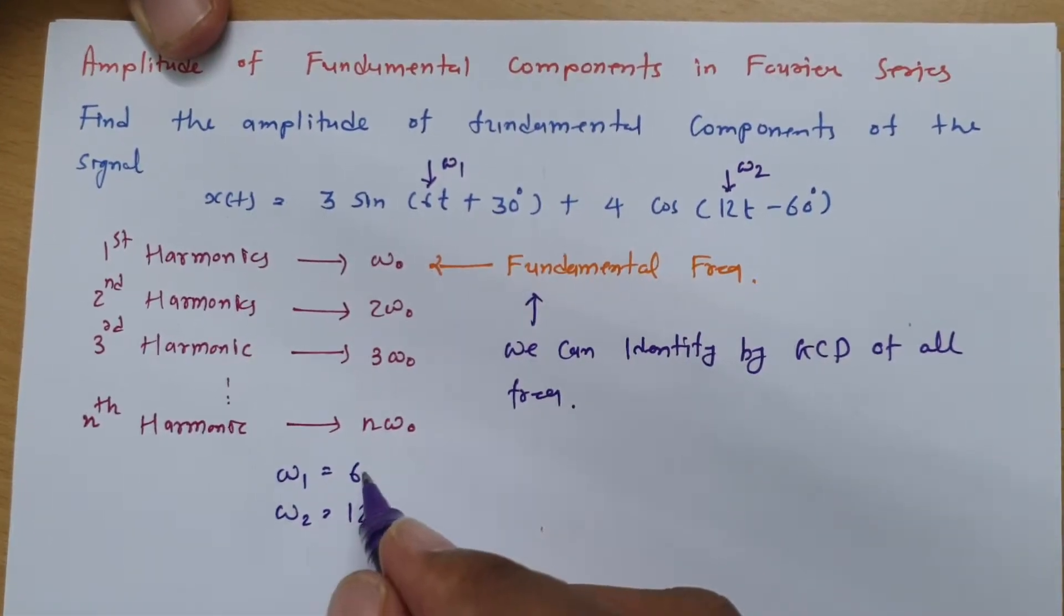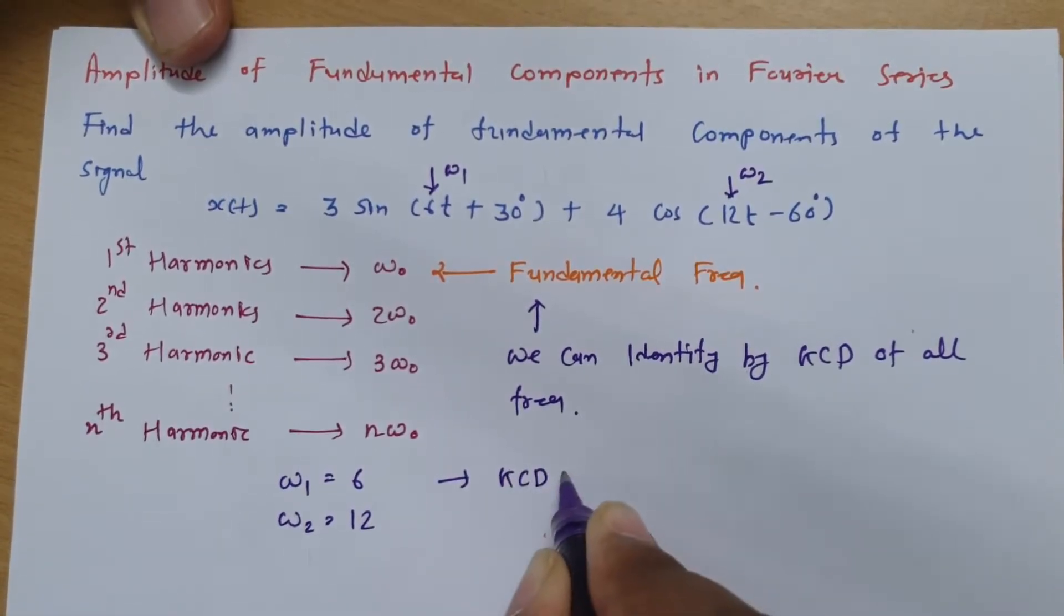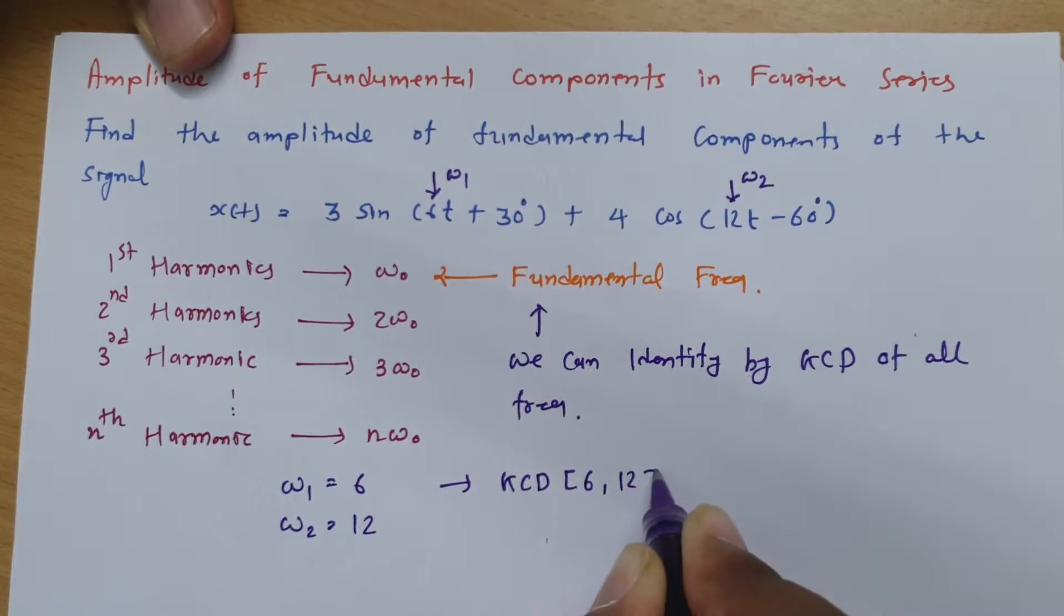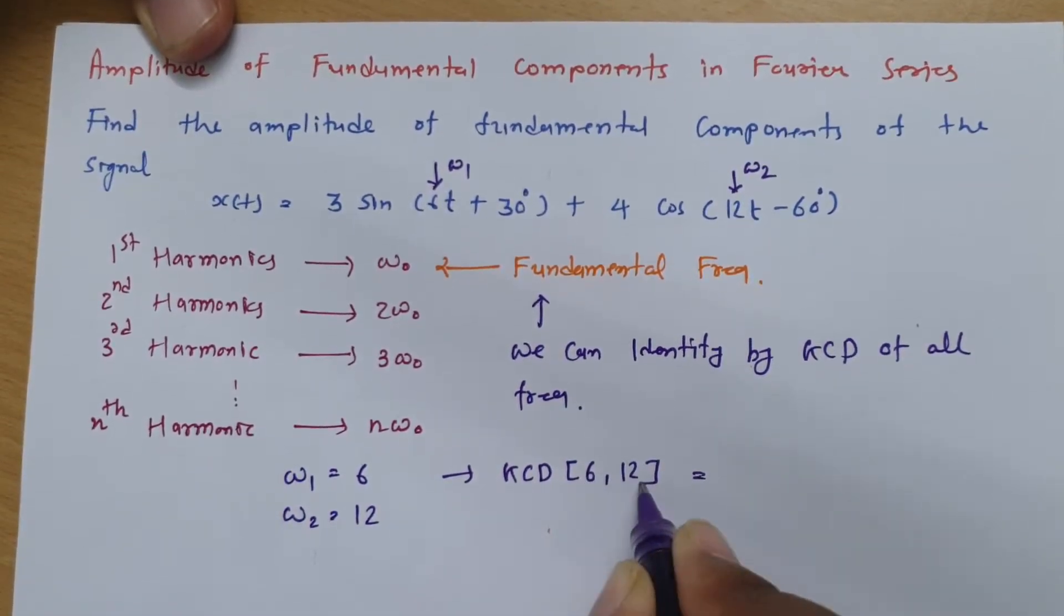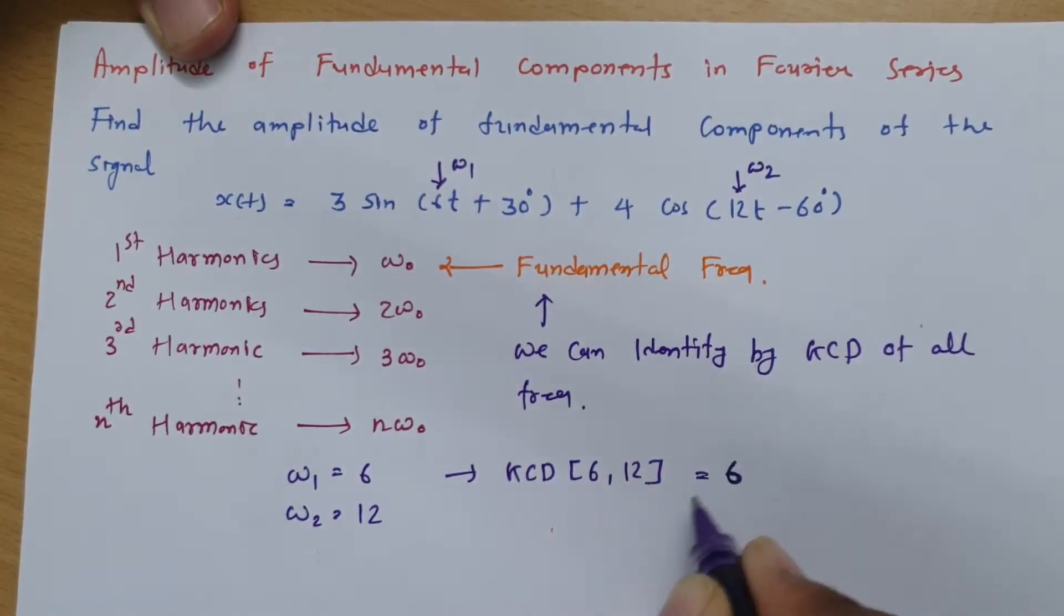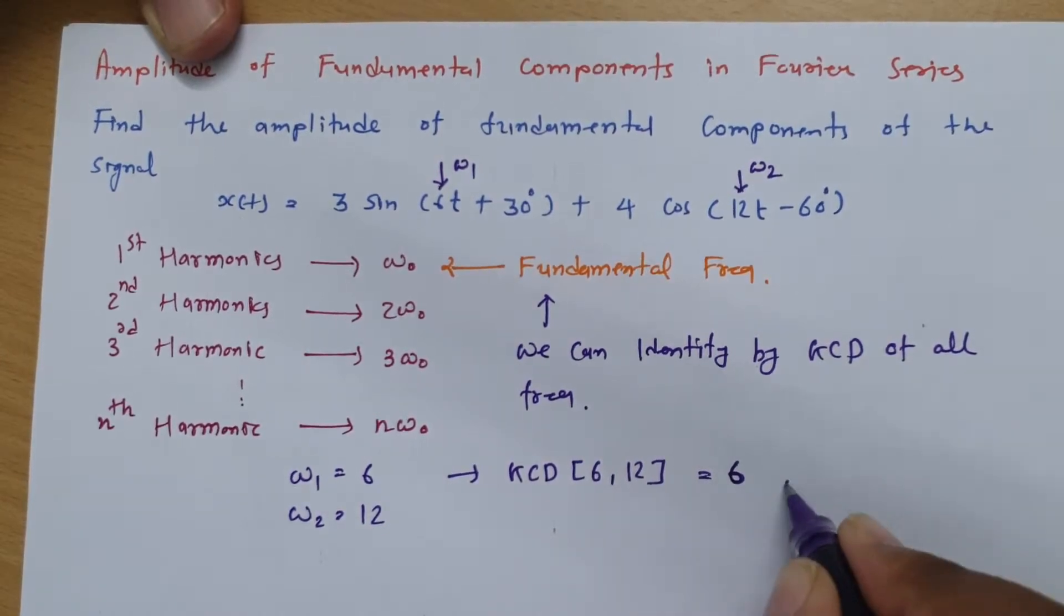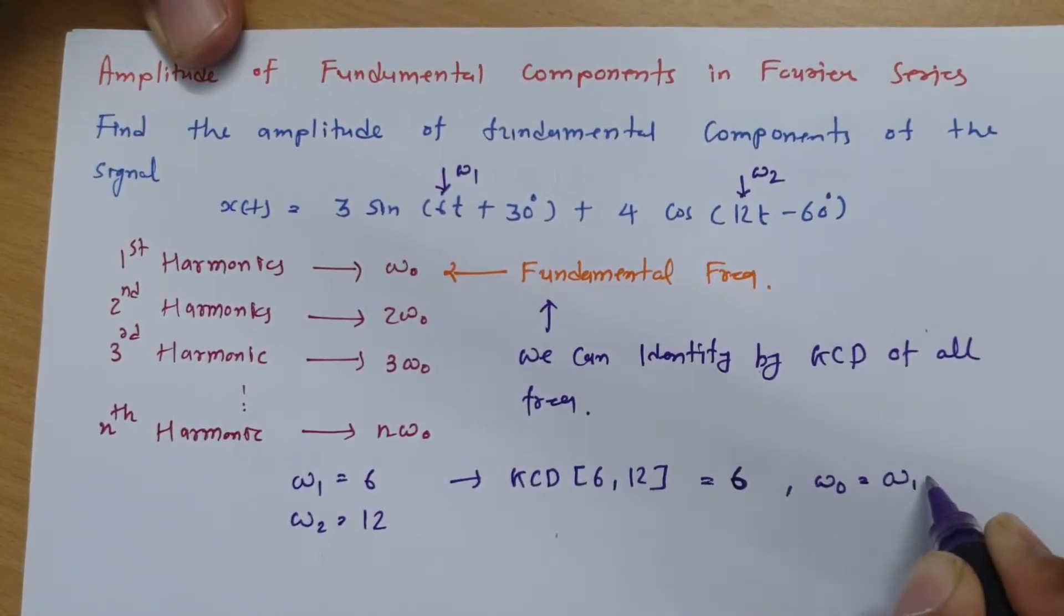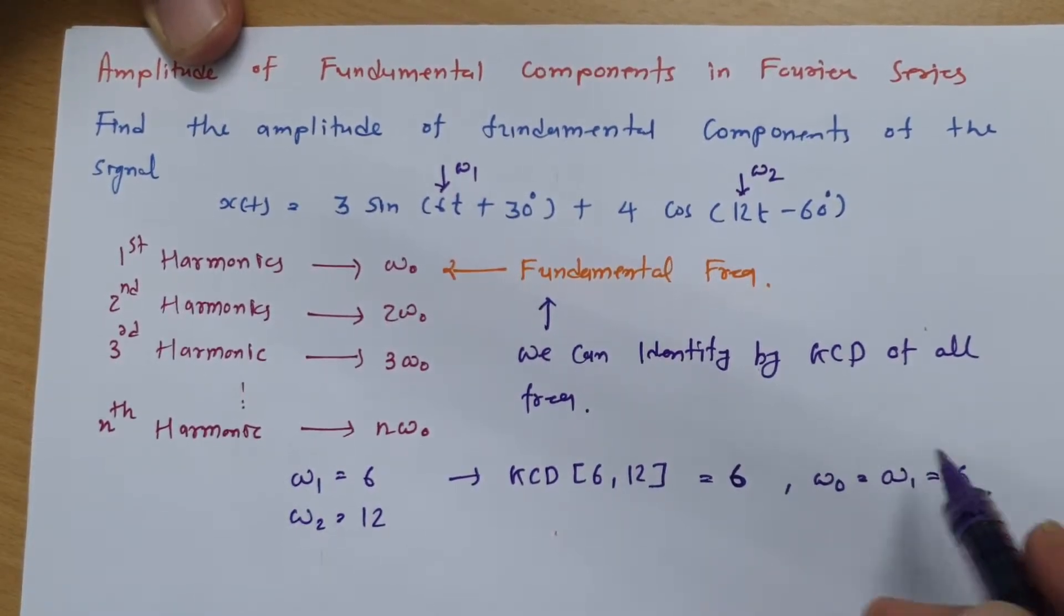Now we should not say directly like omega_0 is equal to omega_1. We should see what is GCD of these two. So GCD of 6 and 12, greatest common divisor. So 6 by 12, so greatest common divisor is 6 over here, right? So as GCD is 6, we can say omega_0 is equals to omega_1 and that is 6.